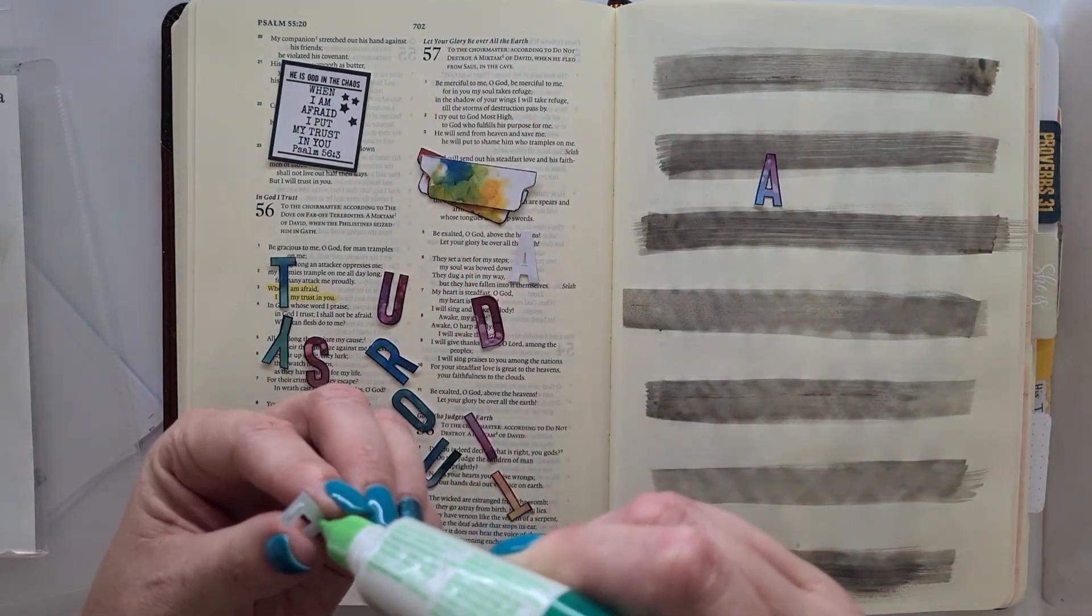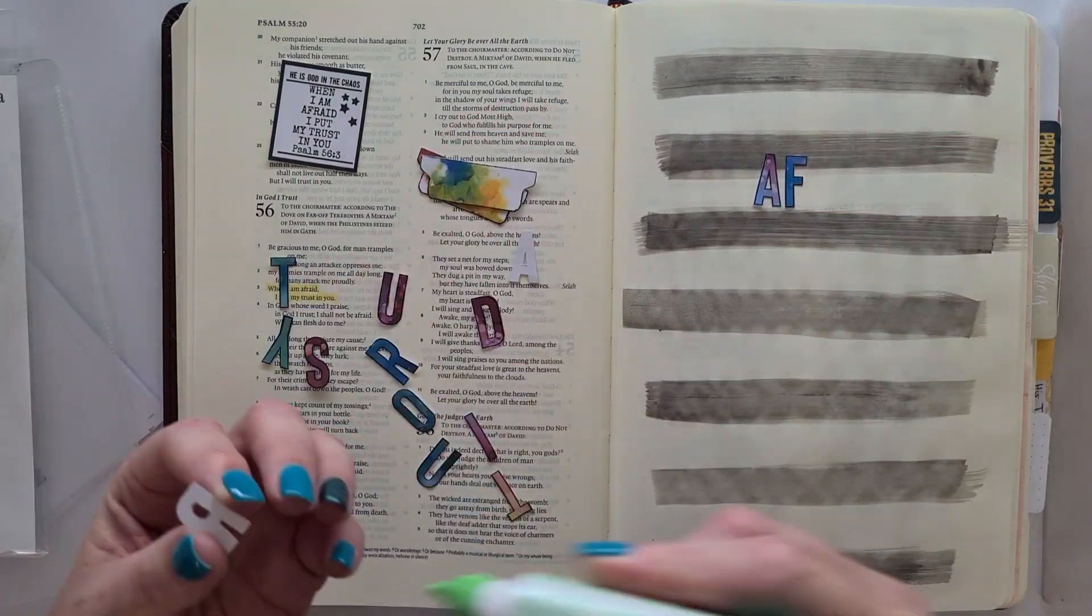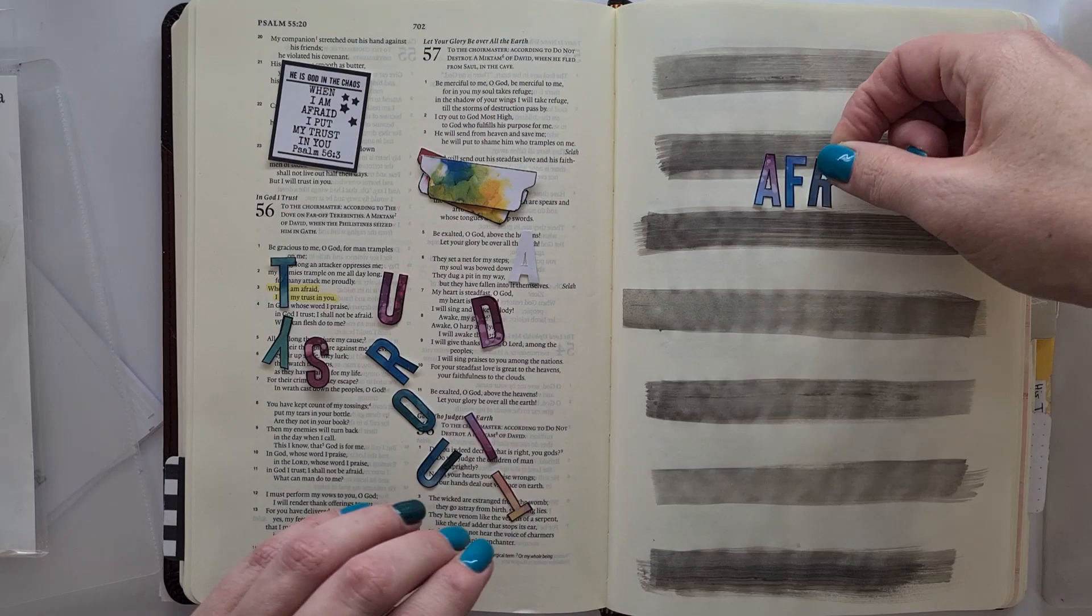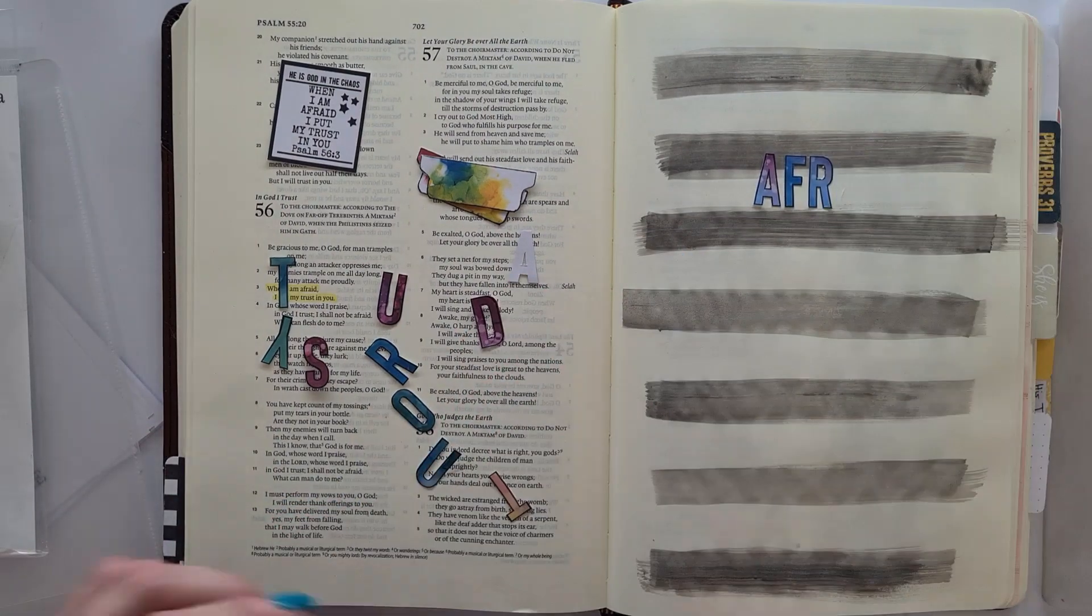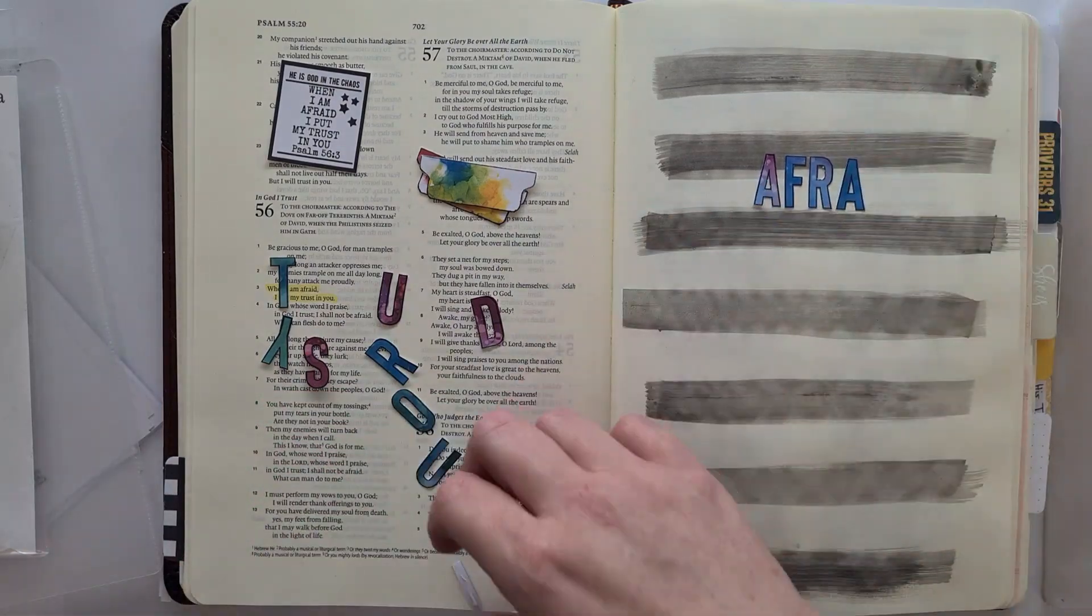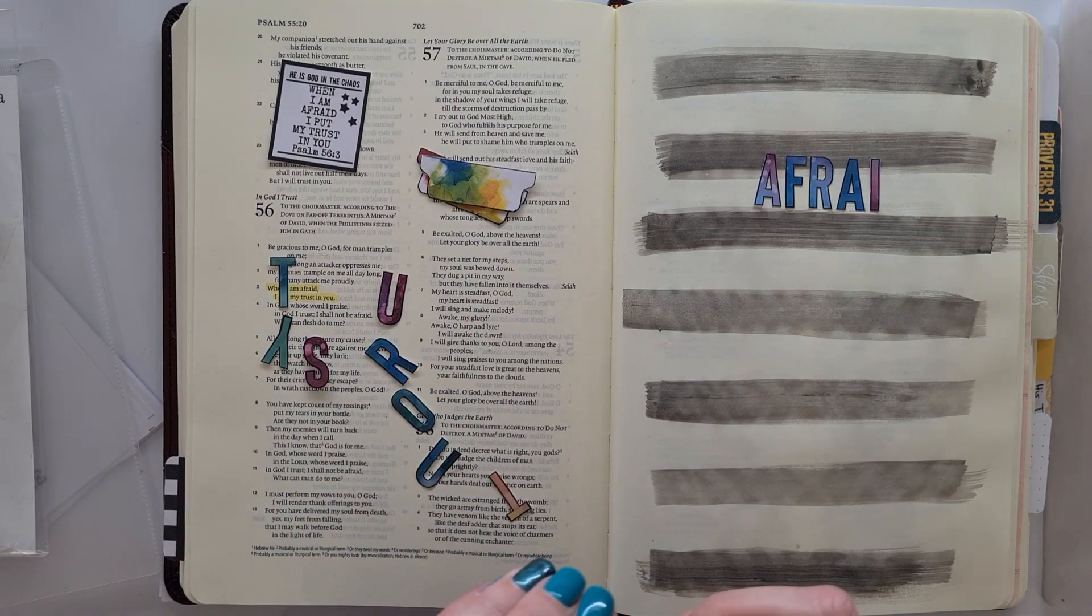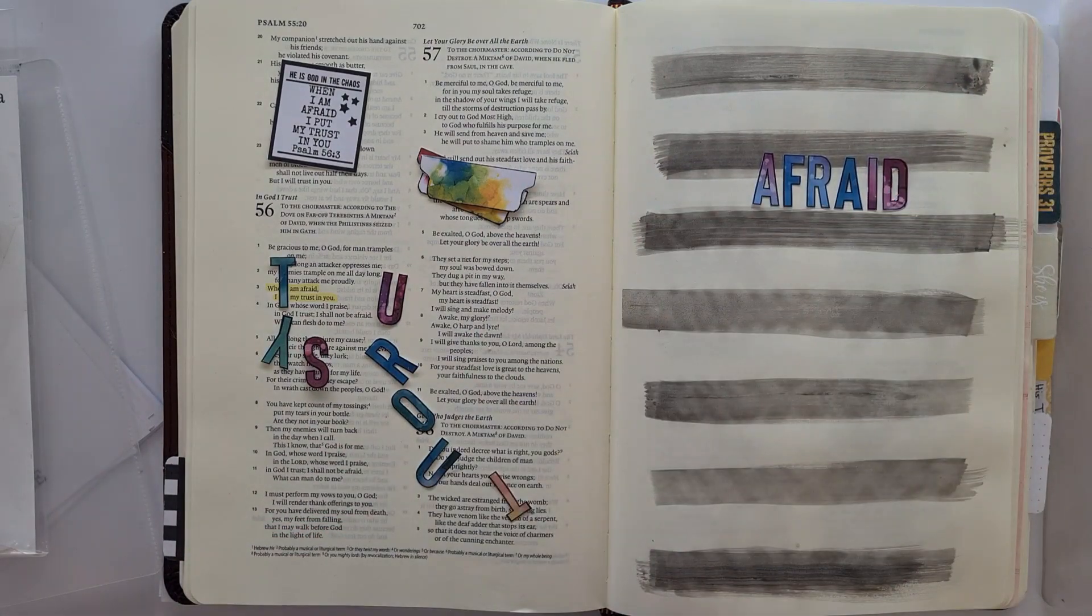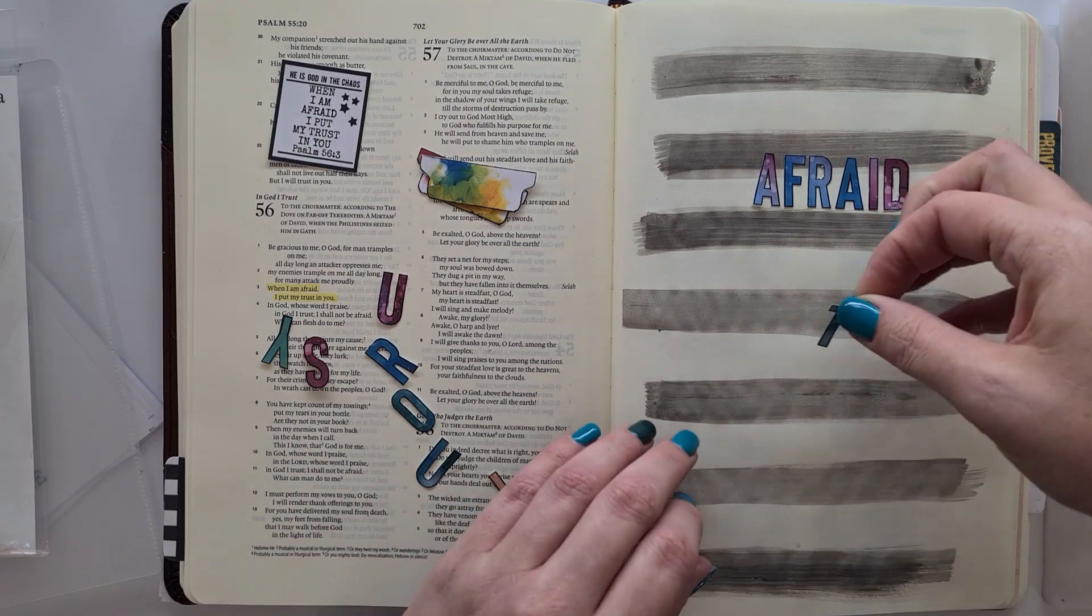I wanted it just a bit bigger, and I probably wanted the alphas bigger too, but you can still see the beautiful artwork behind it. I've already stamped and fussy cut, and I'm going to be gluing these letters onto my page. The words are afraid and trust and you.